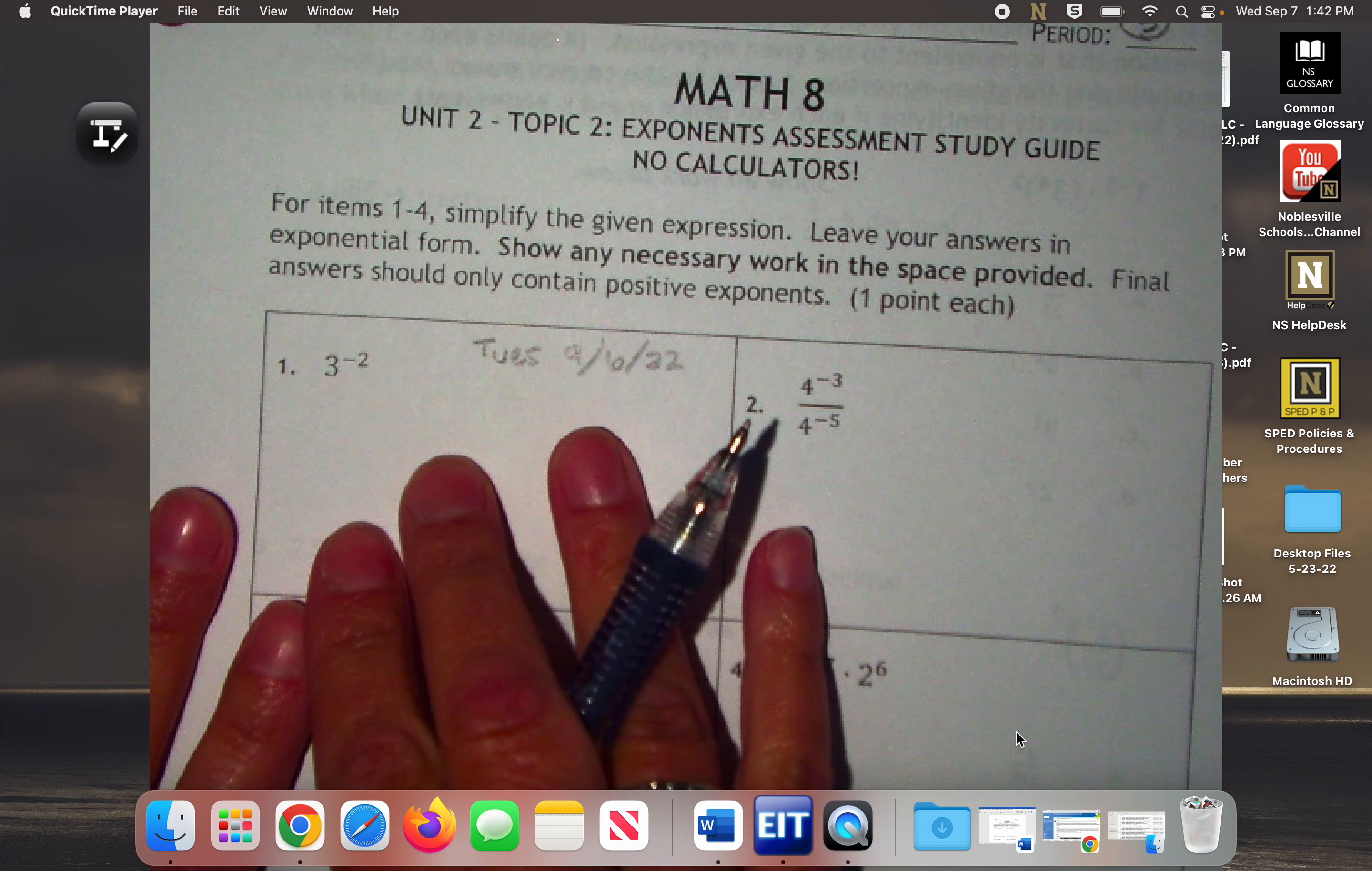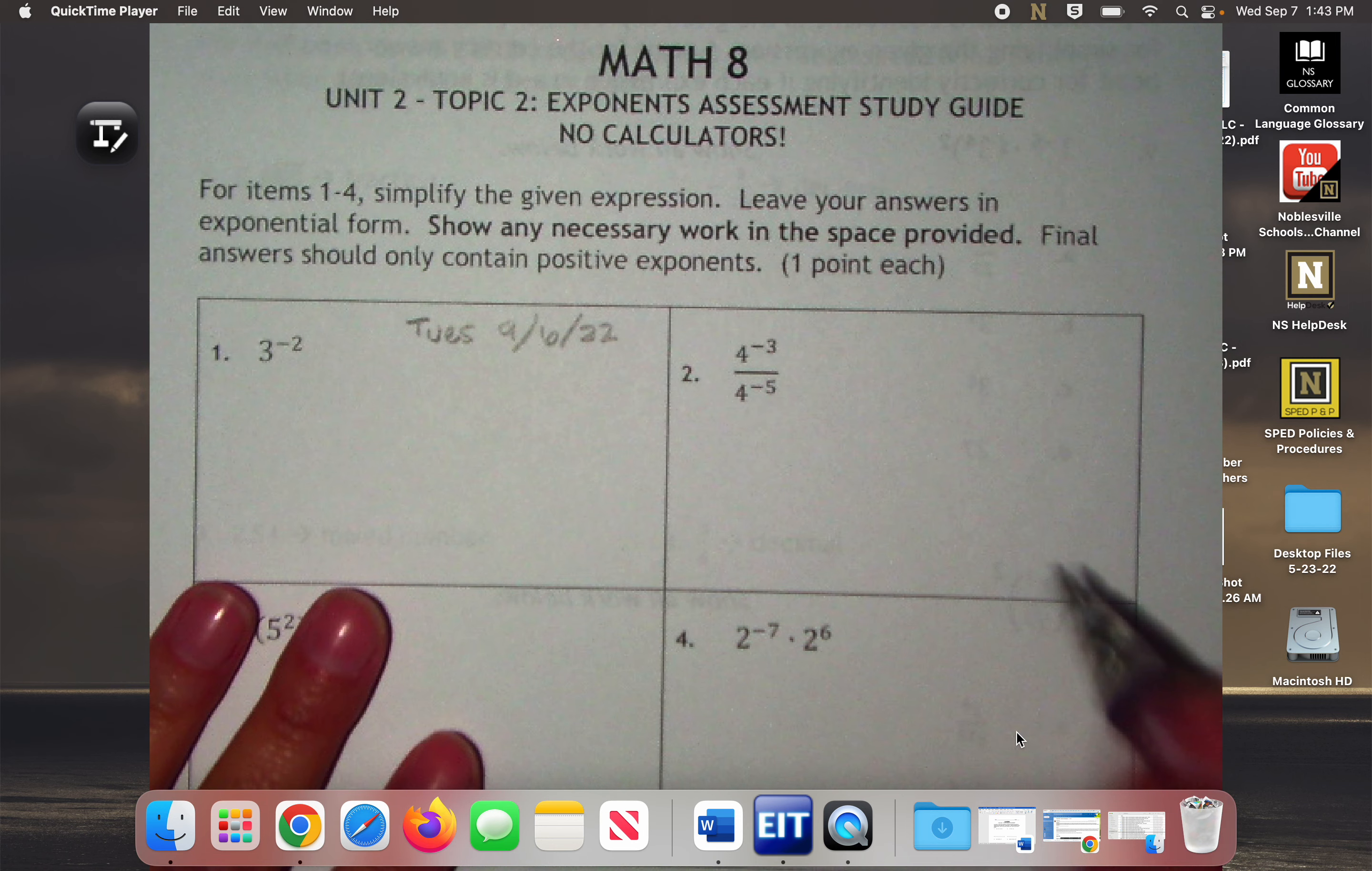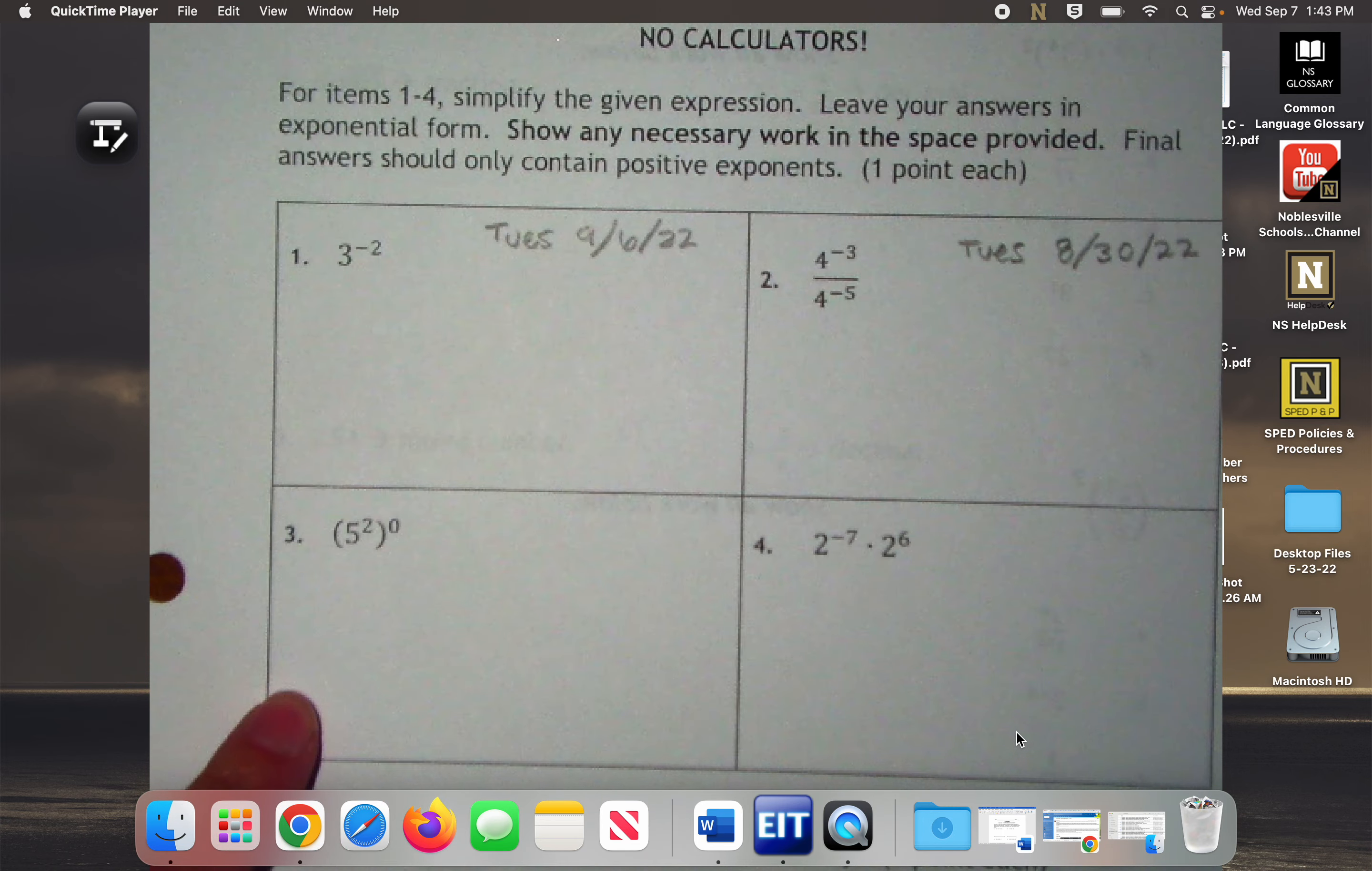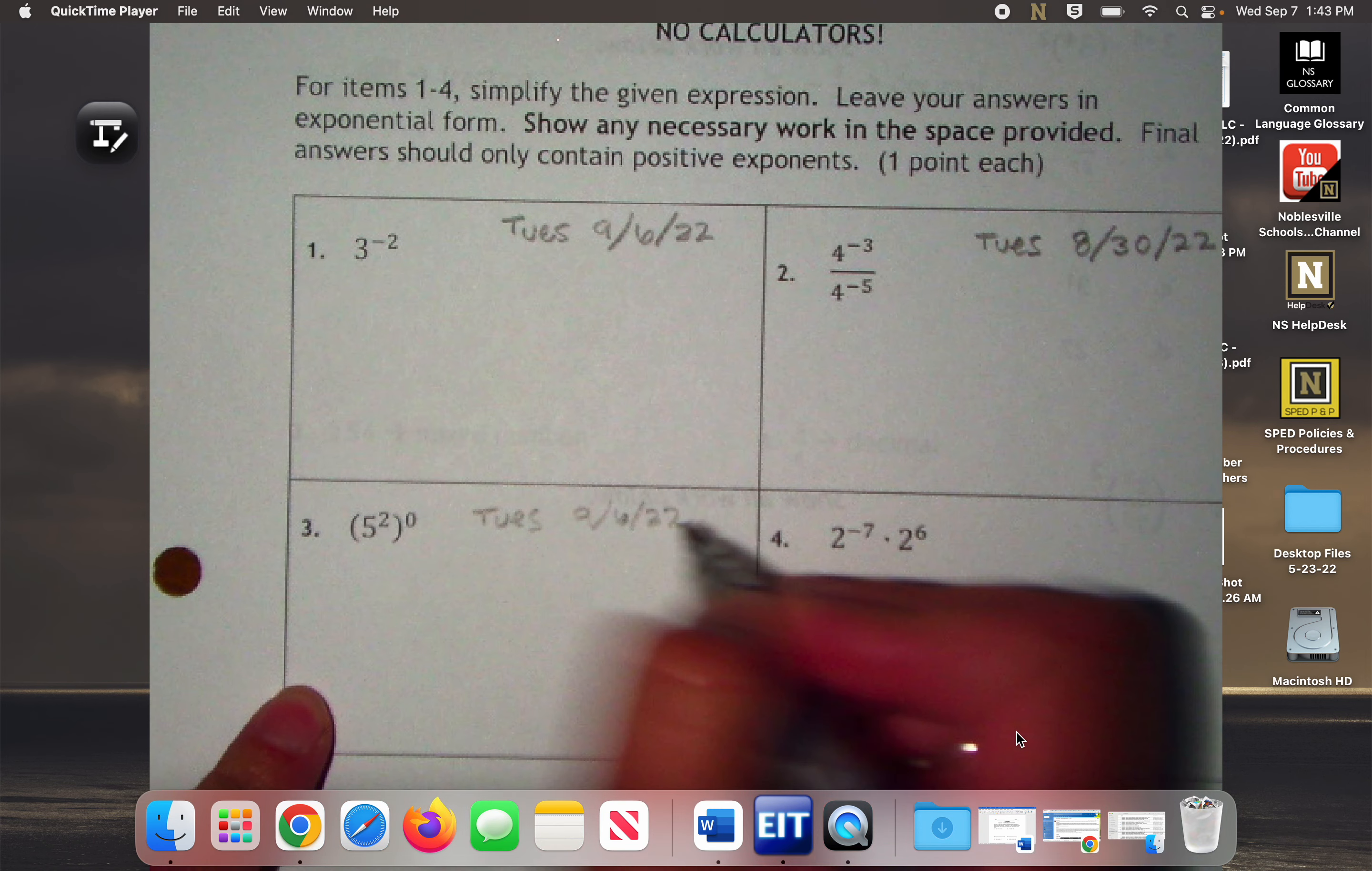So we're not going to solve this right now. We're just going to go through and find more dates. Where can I find information for question two? This is the quotient rule. How about the zero rule? Where can I find information about that? So we're looking at our table of contents. Tuesday, 9/6/22.